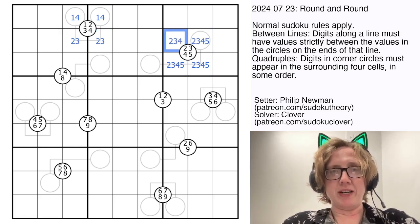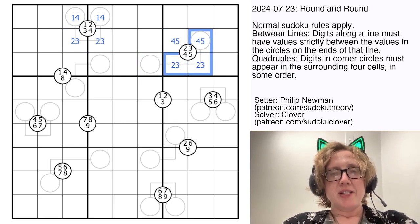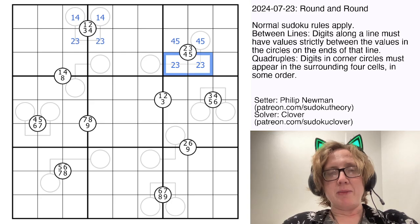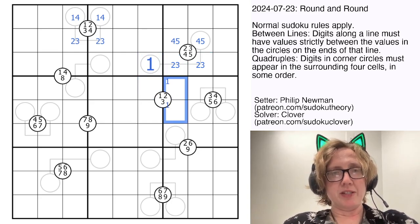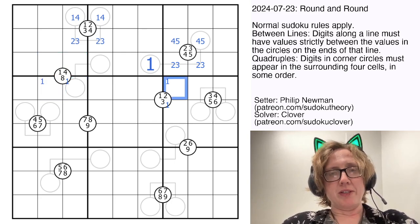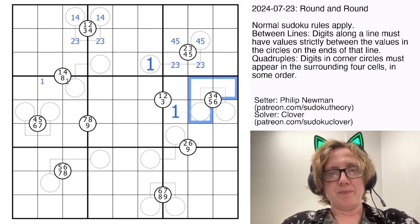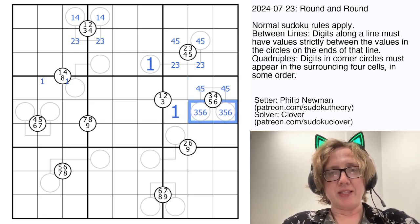So this quadruple is 2, 3, 4, and 5. We can eliminate 2 and 3 here and place them here. So this digit, in order for these to be between, has to be lower, so that will be a 1. And now there will be a 1 in one of those cells, and there will be also a 1 here, because this quad has to have a 1 surrounding it. So because there's a 1 in one of those cells, 1 doesn't go there, so we can place a 1. 3, 4, 5, and 6 in this quadruple.